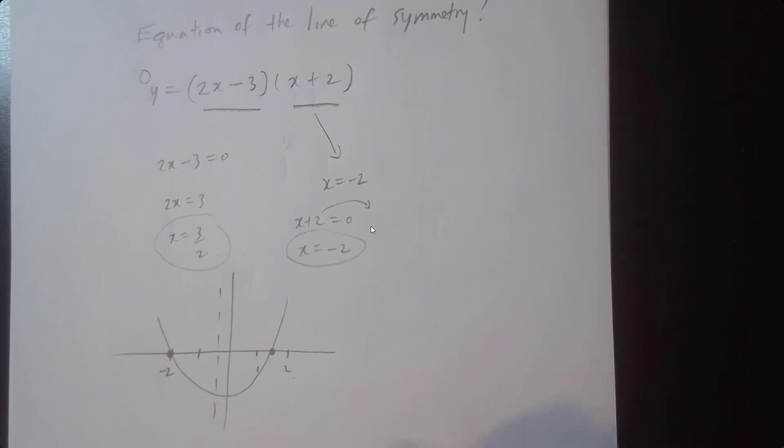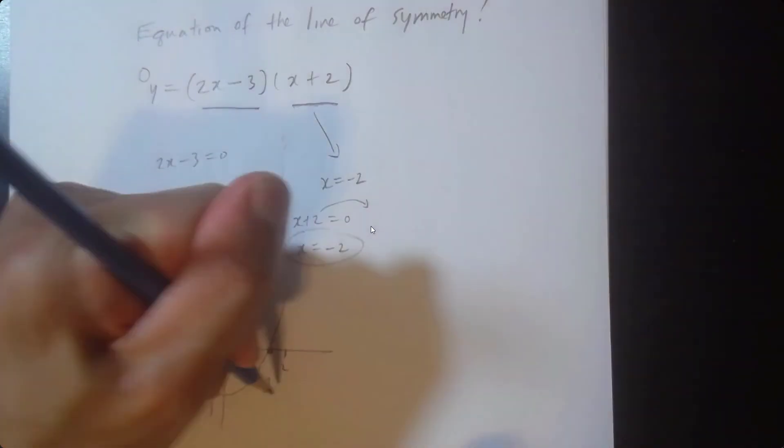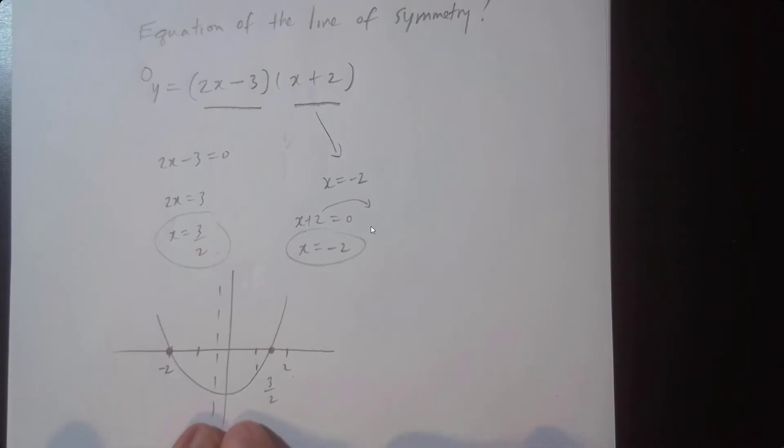So this is something I want you to remember: when you have some nice roots, just add them and divide by 2, and that's the way to find the center line.